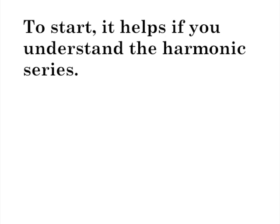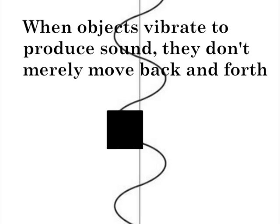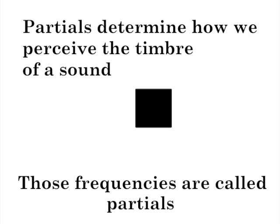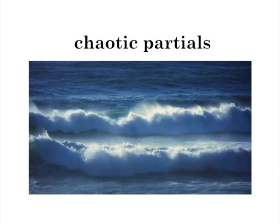When objects vibrate to produce sound, they don't merely move back and forth. They wiggle and jiggle in complex movements. And each way that something moves will have a frequency. Those frequencies are called partials. Those partials determine how we perceive the timbre of a sound. The partials of a sound can be chaotic and unordered, or they may be orderly and geometric.